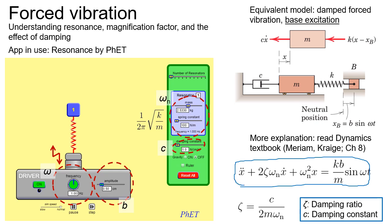From the equation of motion we can see some key terms. Notice there are two different frequencies. The first is the natural frequency of the system. In the app, we can control the natural frequency by setting the value of the mass as well as the spring constant. The default natural frequency is set at 1 Hz.